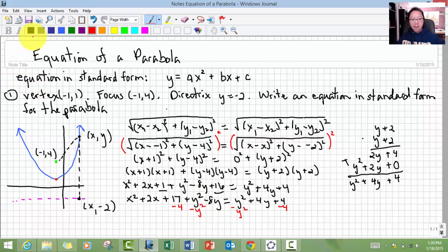So get that to cancel. This is going to be x squared plus 2x. 17 minus 4 is 13. Y squared minus y cancels out to 0. I have a minus 8y. That cancels out to 0. 4y.